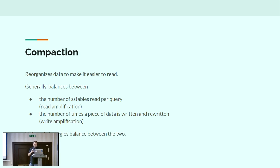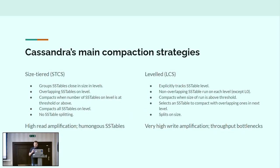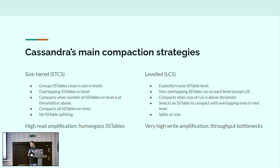We have different compaction strategies to try to balance this differently. In Cassandra, we've had for a long time two main compaction strategies: size-tiered and leveled. Size-tiered works well enough, especially for key-value workloads where you can use bloom filters. It's very efficient, but it has a problem with creating humongous SSTables — files so large they're unwieldy to work with. This is okay if nothing goes wrong, but the moment something needs to be done, like introduce a new node or repair something, or if a node dies and has to restart a very long-running compaction, you run into problems because of the size of these SSTables.